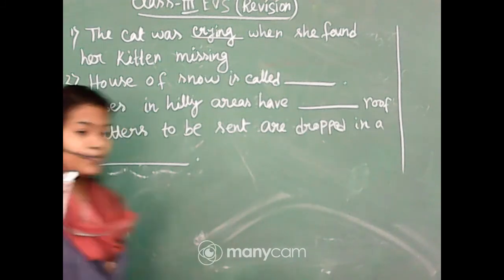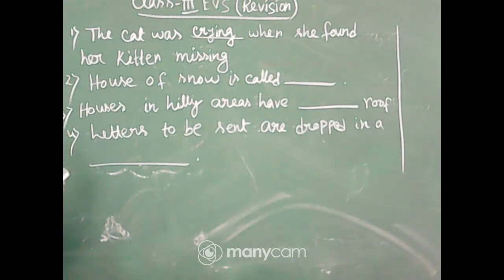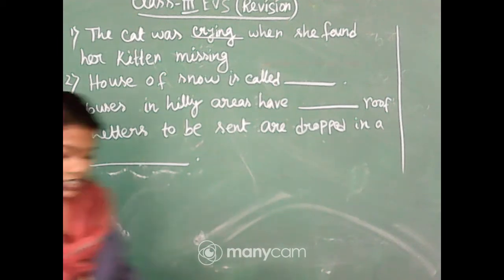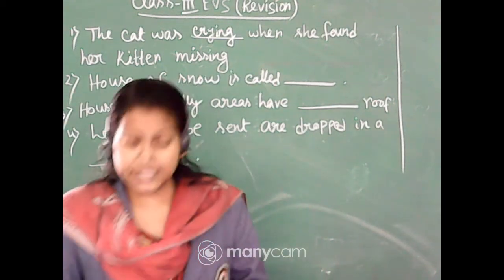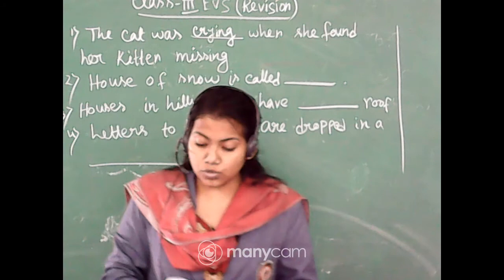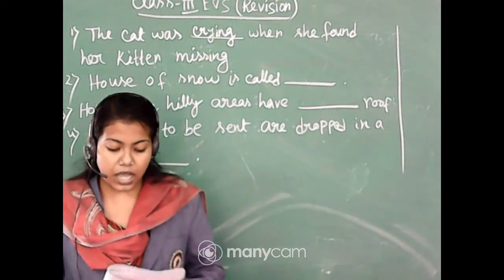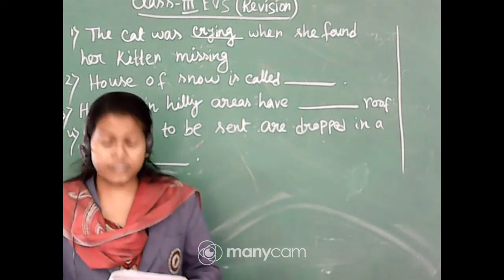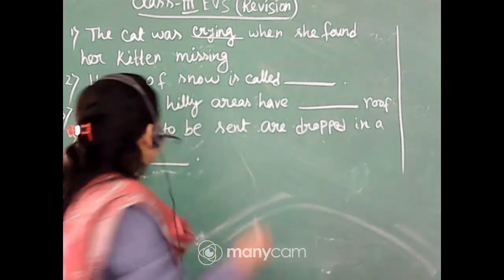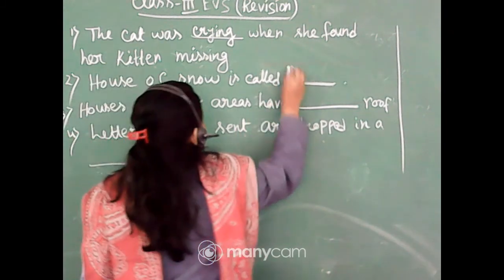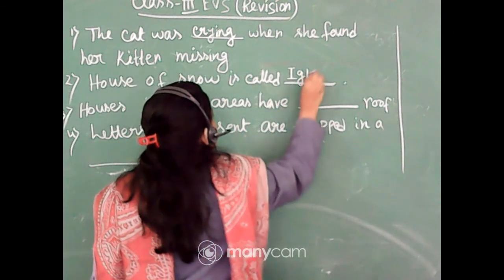Next number two, house of snow is called. There are three options: igloo, ziggloo and ringloo. So which answer is correct? House of snow is called igloo. I-G-L-O-O.